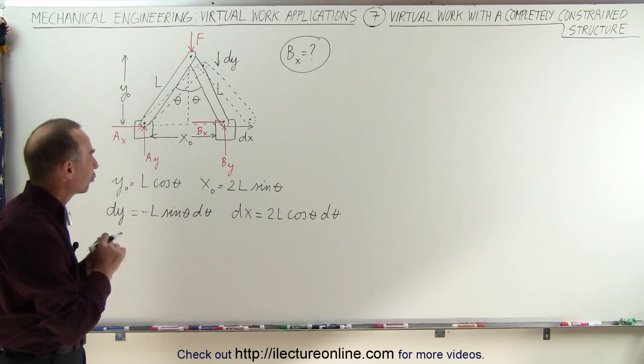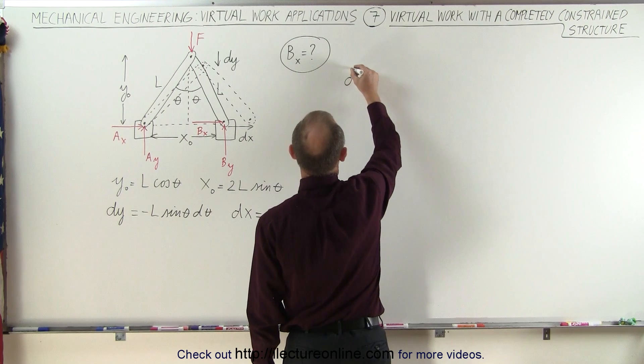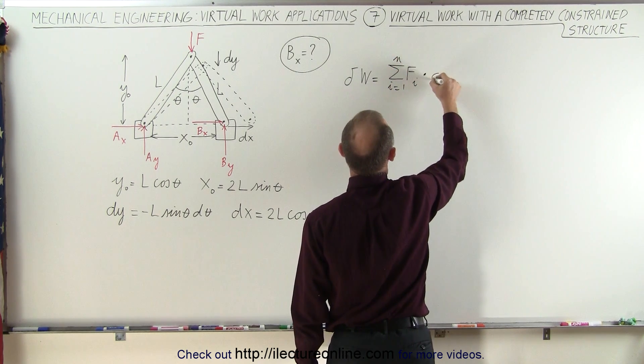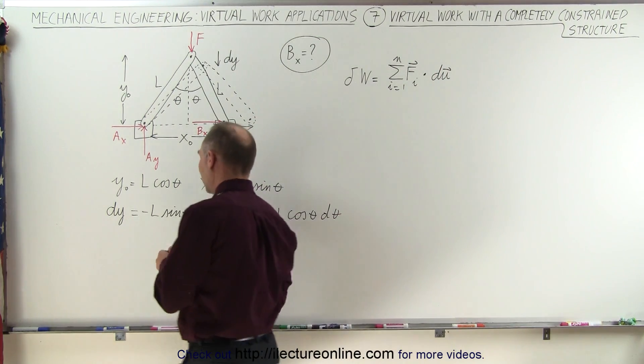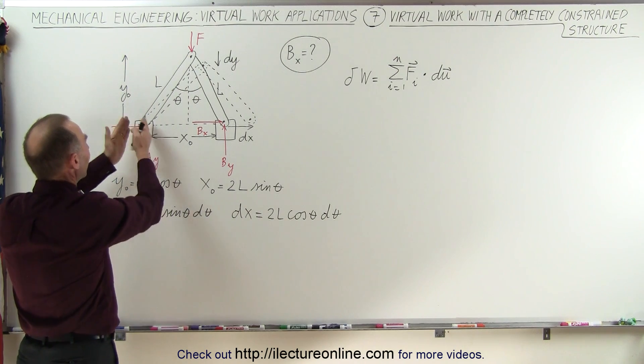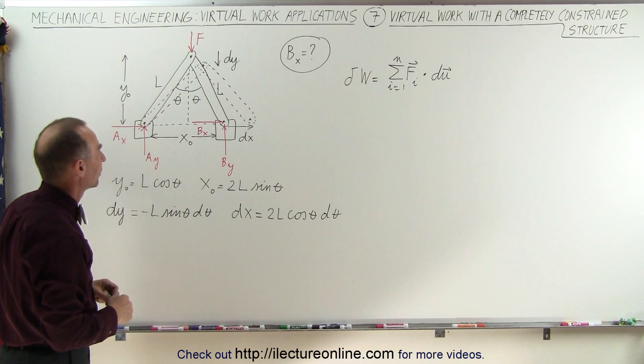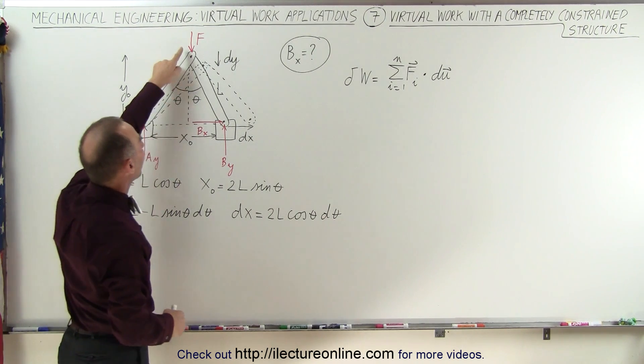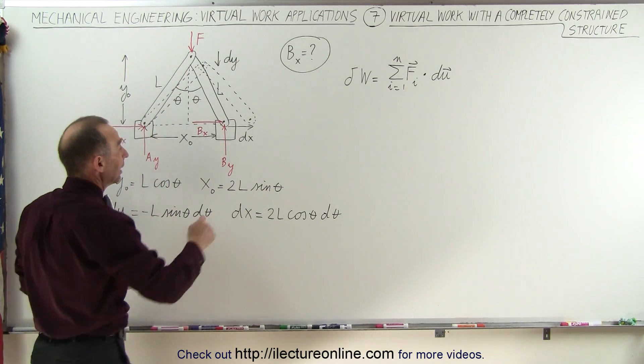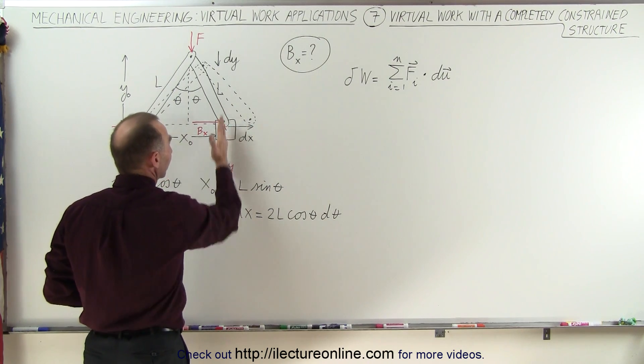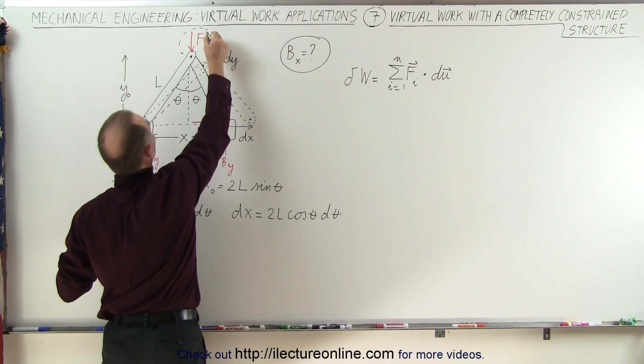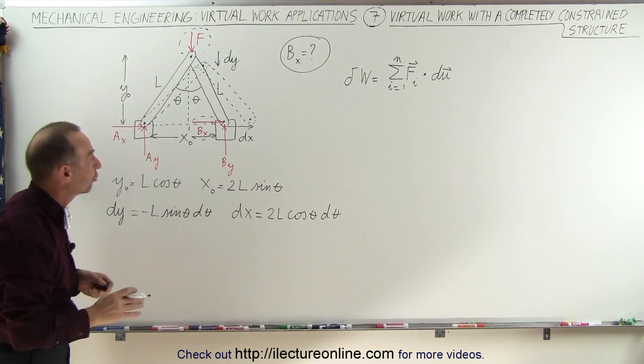So now we're going to describe the virtual work done. The virtual work done is equal to the sum of all the forces from I equals 1 to N times all the displacements. Notice that the reactionary force of A sub X and A sub Y do not aid in the virtual work done because there's no virtual displacement here. The only three forces that contribute is F because there's a virtual displacement there, B sub X because there's a virtual displacement here, and B sub Y. However, if the displacement is in the horizontal direction and the force is acting in the vertical direction, the angle between those is 90 degrees and the cosine of 90 is zero, which means we only need to take into account F and B sub X.